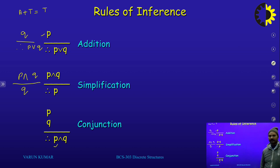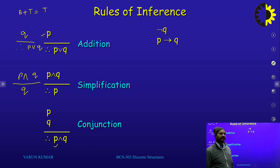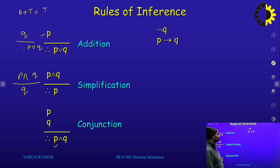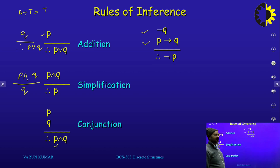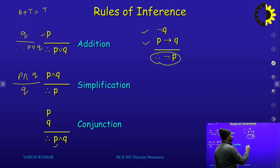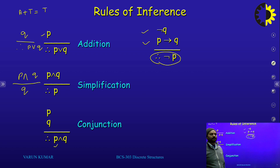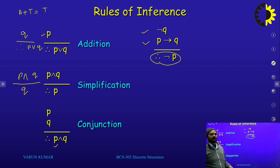If negation of q is true, it means q is always false. My first proposition is negation of q, meaning the value of q is always false. My second statement is p implies q — if this implication is true, then my conclusion is negation of p, meaning p is always false. Negation of q is always true means q is always false, and negation of p is always true means p is always false. This is called Modus Tollens.